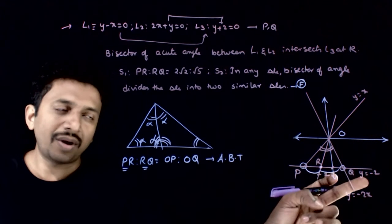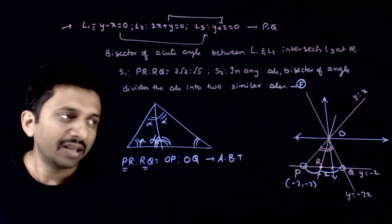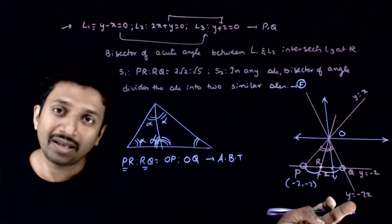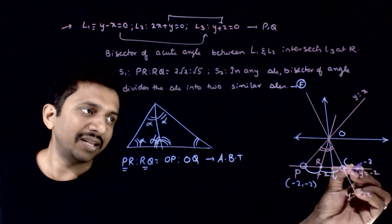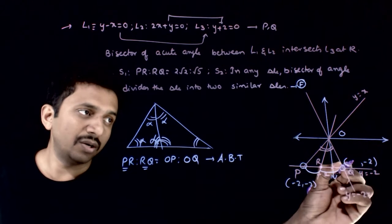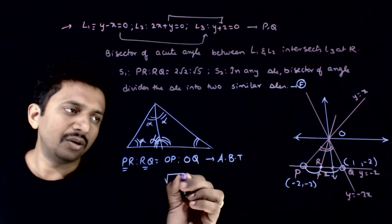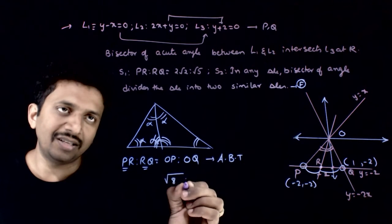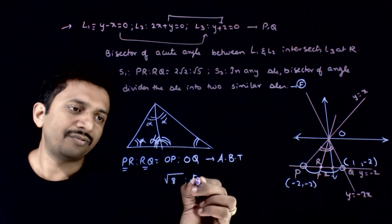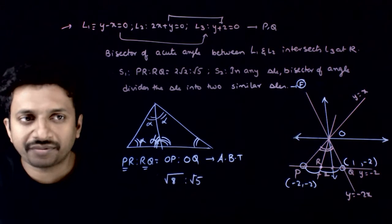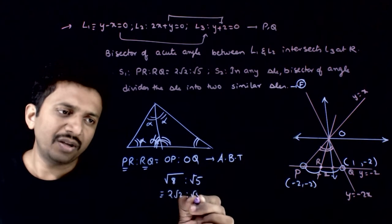Point P is the intersection of y = -2 and y = x, so P = (-2, -2). Point Q is the intersection of y = -2 and y = -2x. If y = -2, then x = 1, so Q = (1, -2). Therefore OP = √(2² + 2²) = √8 = 2√2, and OQ = √5. Hence the ratio is √8 : √5, which is 2√2 : √5.